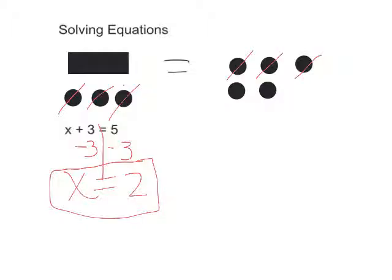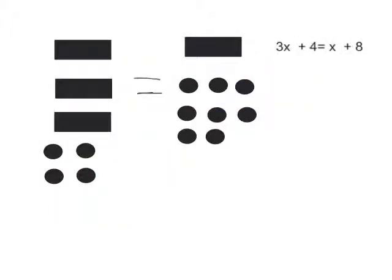Now let's look at what happens when there are variables on both sides. Now I have rectangles on both sides of the equal sign. This picture represents 3x plus 4 equals x plus 8. In order to figure out what's in one rectangle or one x, I would first cross out an x on both sides, which would leave me with 2x on the left and no x on the right.